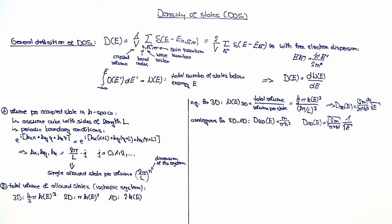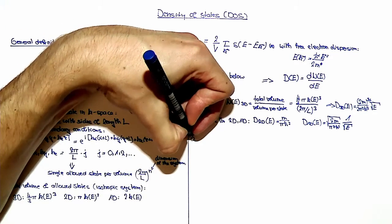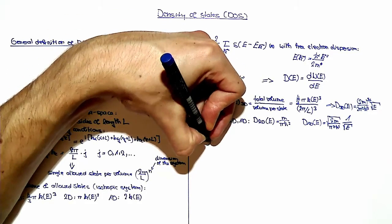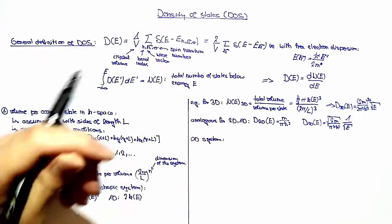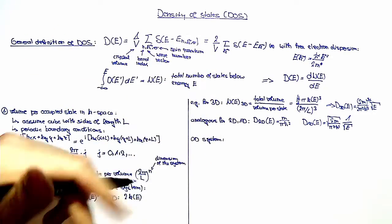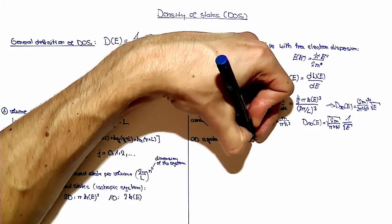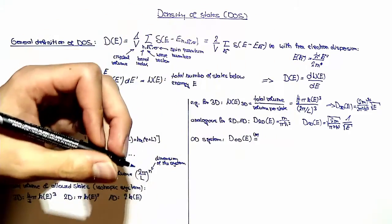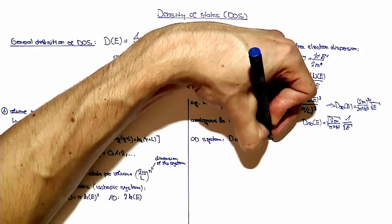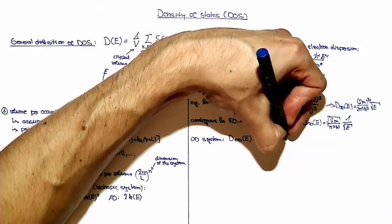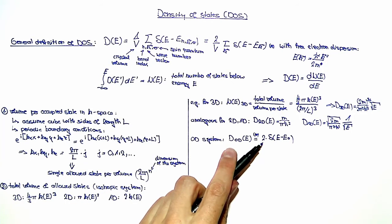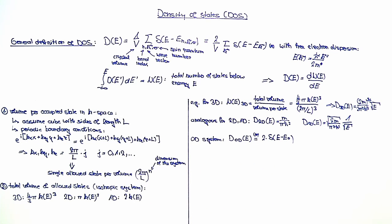We are also asked to calculate the density of states for a zero-dimensional system. For the 0D system, we can directly use the equation such that D(0D) depending on energy is given by 2 times delta(E - E0), where the 2 comes from the spin degeneracy again. This is the solution for the free electron case.